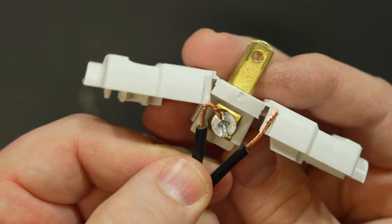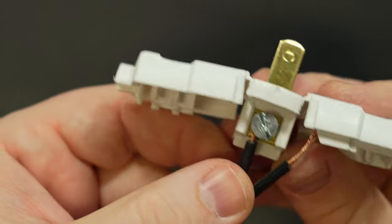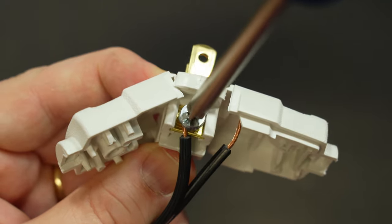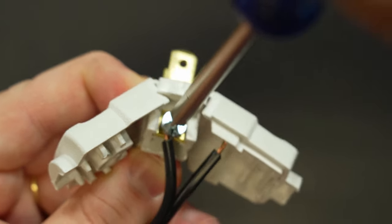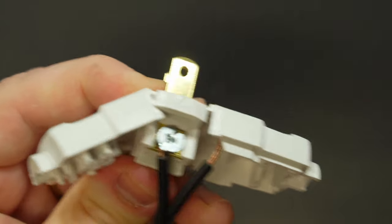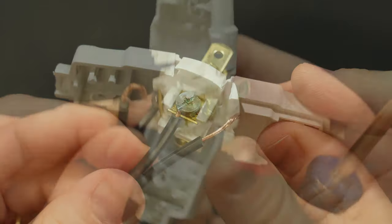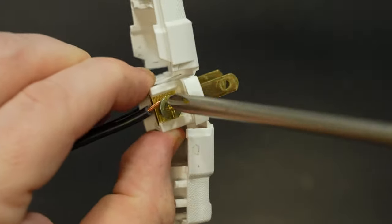Again we'll start with a little hook shape in the wire but this time when we place it behind the head of the screw we'll be very careful to make sure that it's going to wrap clockwise around the barrel of the screw. Then as we tighten down the screw the conductor will stay wrapped nice and tightly around the screw resulting in a strong and safe connection.